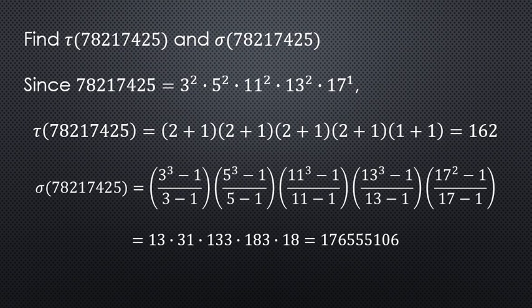For tau, we're going to take each of these powers — 2, 2, 2, 2, and 1 — add 1 onto each of those, and then take the product of those things. So it's 3 times 3 times 3 times 3 times 2, which gives us 162.